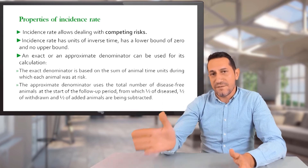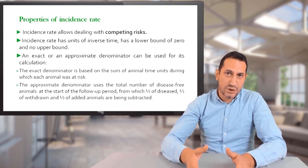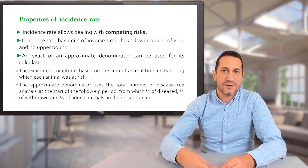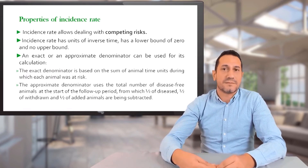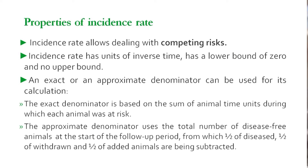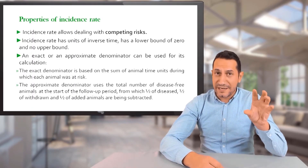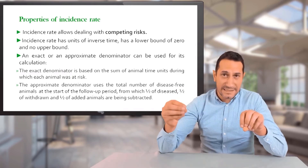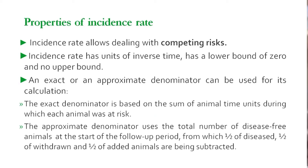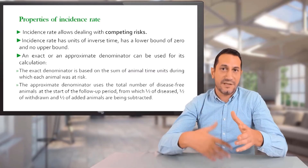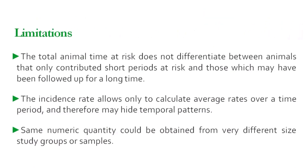That accounts for other risks involved, which is a deficiency of the cumulative incidence. The incidence rate has an inverse time unit, so it can go from zero up to infinity, and that infinity depends on the time scale we choose to follow through. The incidence can be calculated based on an approximate denominator or an exact denominator. The exact denominator is the sum of all time periods where the animals are at risk, while the approximate denominator is the total number of animals at the beginning of the study plus the number of animals left at the end, divided by two — accounting for the fact that, on average, animals are removed from the study at the midpoint.